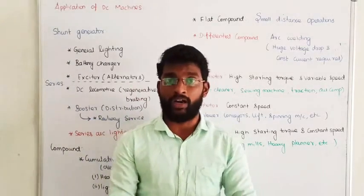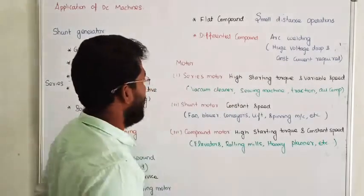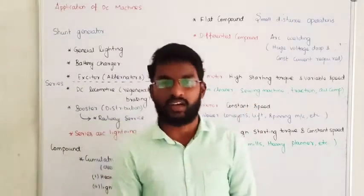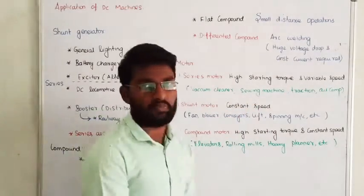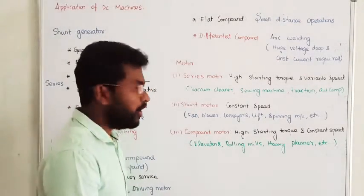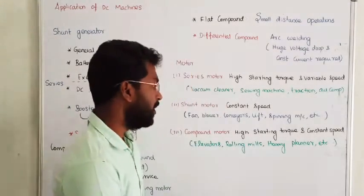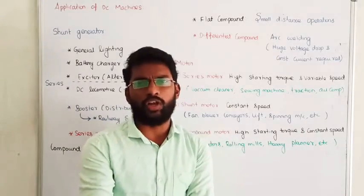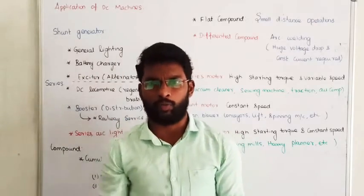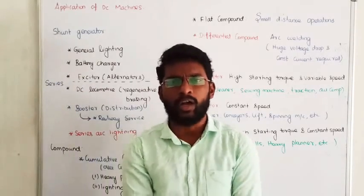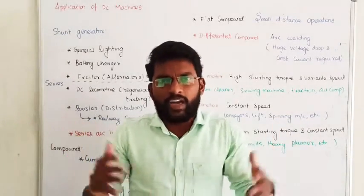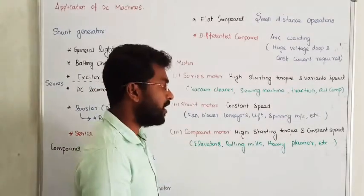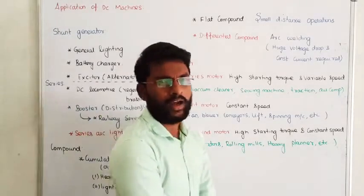The Compound motor can provide high starting torque at the same time as constant speed. In a Series motor, we get high starting torque but the speed keeps varying — variable speed, constant torque. In the Shunt motor, speed is constant but starting torque is not very high. The Compound motor provides both high starting torque and constant speed. So wherever there is a need for high starting torque and constant speed — like a lift — we use a Compound motor.